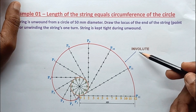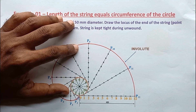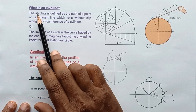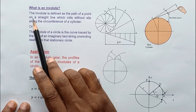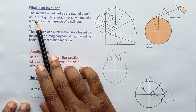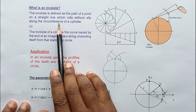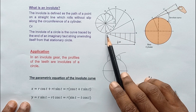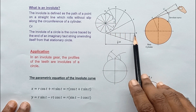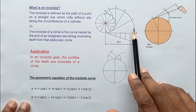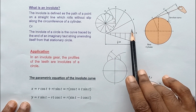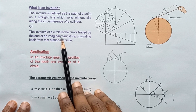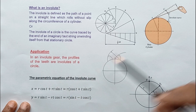Before constructing this involute, let's understand what it is. An involute can be defined in two ways. First, the involute is the path of a point on a straight line which rolls without slip along the circumference of a cylinder — you can see the relevant diagram. If this straight line rolls over the cylinder without slip, a point on it follows the involute path.